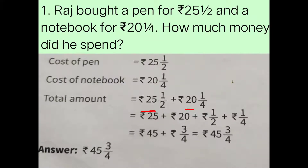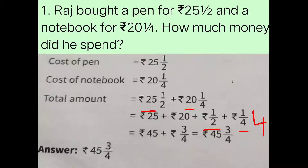Before adding the fractions, we have to check whether the denominators are the same. Here the denominators are not the same. So first we have to find the LCM of 2 and 4. The LCM of 2 and 4 is 4. After taking the LCM, we check what each denominator needs to be multiplied by to get 4. For 1/4, the denominator is already 4, so we are not going to change that number.